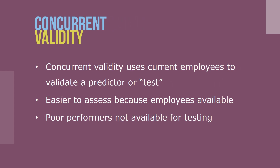A criterion-related validity study can be conducted in two different ways: using current employees or using applicants. Concurrent validity uses current employees to validate a predictor or test. It may be easier to assess because employees are ready and available and can take the predictor test immediately, which shortens the time needed to complete the validation study. A disadvantage is that employees who have not performed satisfactorily are probably no longer with the firm, so they can't be tested.